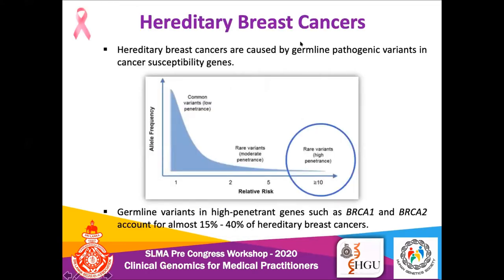Hereditary breast cancer is usually caused by germline pathogenic variants in cancer susceptibility genes, also known as cancer predisposing genes. These variants can be classified into three categories: rare variants in high-penetrant genes, which increase cancer risk by more than tenfold; rare variants in moderate-penetrant genes, which increase risk by two to fivefold; and common variants in low-penetrant genes, which may increase risk by one to twofold, but alone are not sufficient to cause cancer — many other factors must come into play.